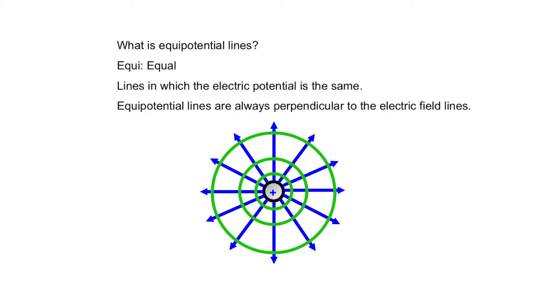Now what are equipotential lines? Equipotential lines are exactly what the word means — they are lines in which the magnitude of the electric potential is equal. Remember, equipotential lines are always perpendicular to electric field lines.